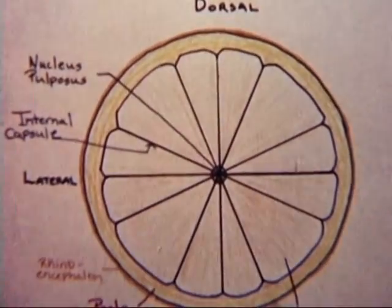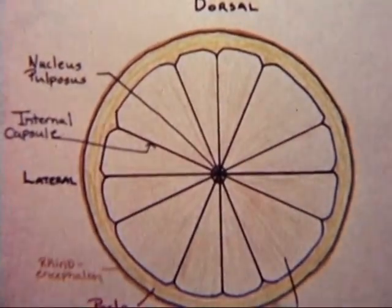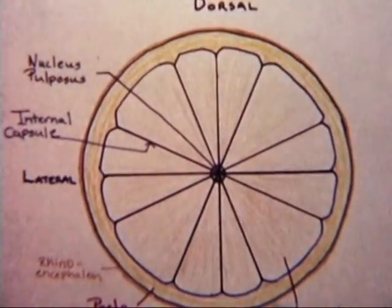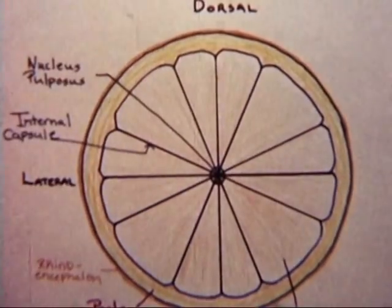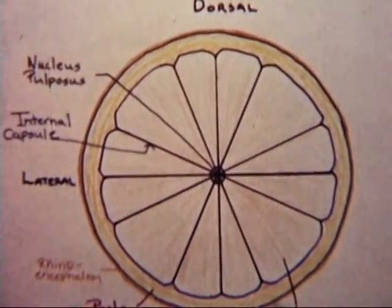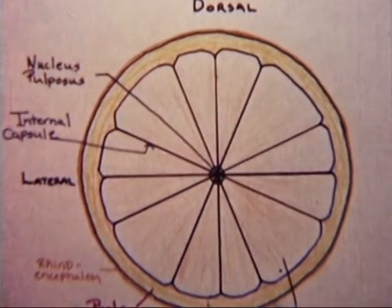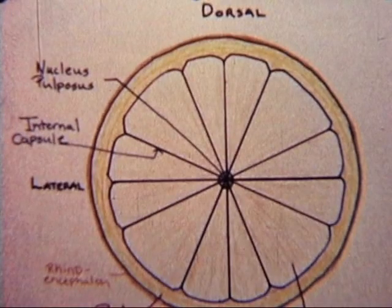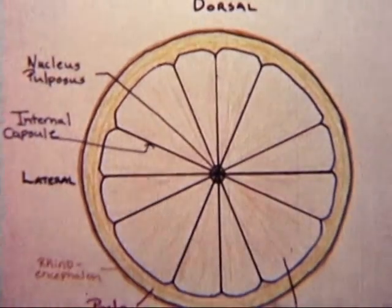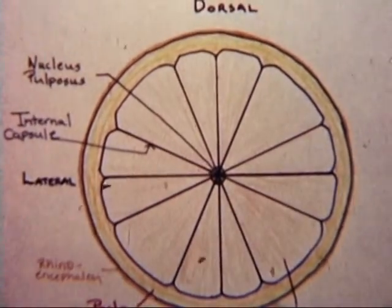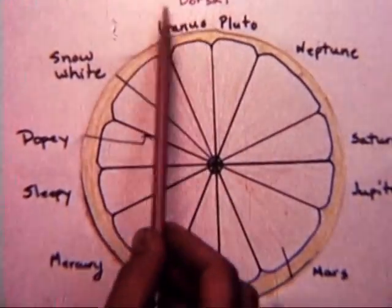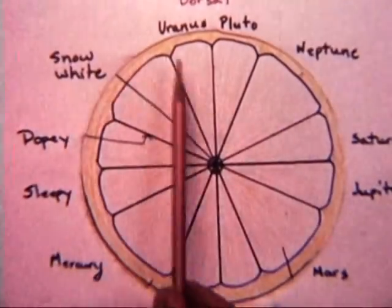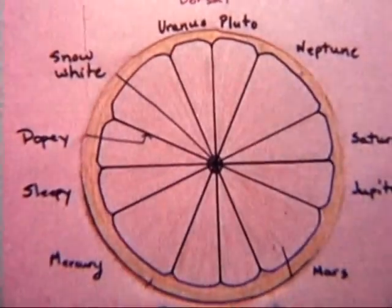Norengiate lobes number from 11 to 14 in quantity, a variable number due to the intrauterine environment of the embryo. High quantities of maternal ascorbic acid ingestion during pregnancy generally correlate positively with a greater number of lobes. A thorough knowledge of the name and location of each lobe is necessary. Each lobe is named according to a heliocentric orientation to the universe, with nucleus pulposus as sun, and dorsal lobes being the more distal planets and ventral lobes the more proximal planets.